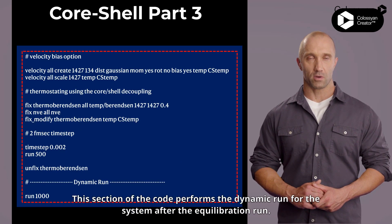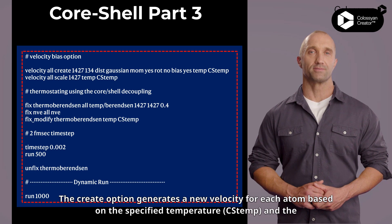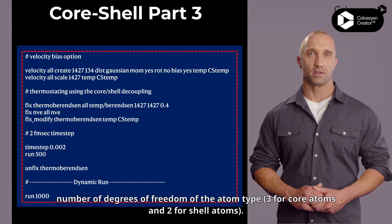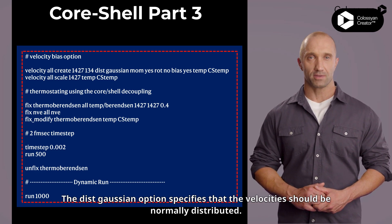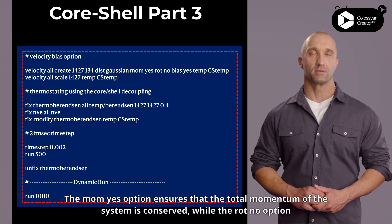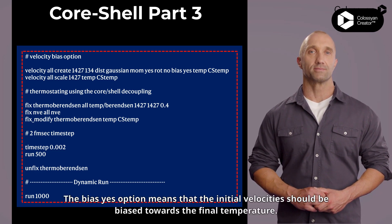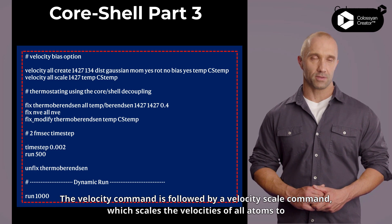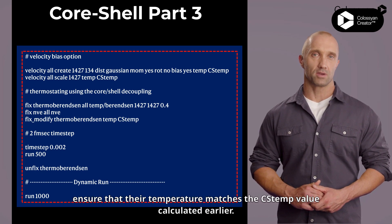Let's go over the third and last part of this code. This section of the code performs the dynamic run for the system after the equilibration run. The velocity command assigns initial velocities to all atoms in the system. The create option generates a new velocity for each atom based on the specified temperature, c_temp, and the number of degrees of freedom of the atom type. The dist Gaussian option specifies that the velocity should be normally distributed. The mom yes option ensures that the total momentum of the system is conserved, while the rot no option specifies that the system should not have any net angular momentum. The bias yes option means that the initial velocities should be biased towards the final temperature. The velocity command is followed by a velocity scale command, which scales the velocities of all atoms to ensure that their temperature matches the c_temp value calculated earlier.